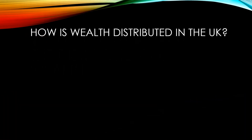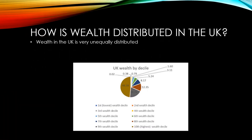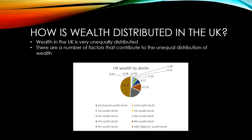Wealth in the UK is very unequally distributed, even more so than income. As you can see from this chart here, the top 10% of wealth holders in the UK hold over 48.5% of all wealth. Meanwhile, the bottom 30% of wealth holders hold only just over 1% of wealth between them. There are a number of factors that contribute to the unequal distribution of wealth in the UK, and we're going to take a look at each of these in more detail now.